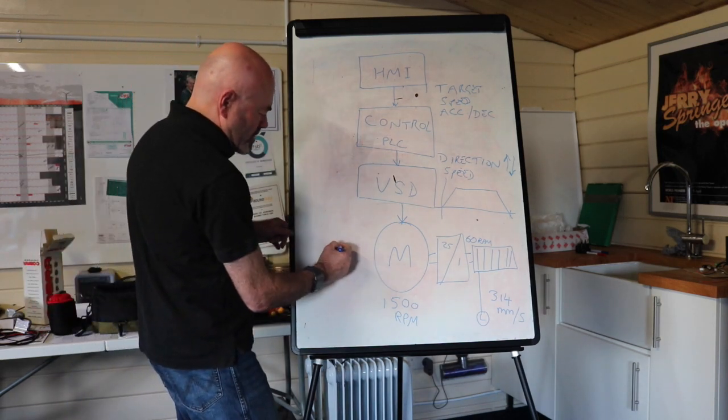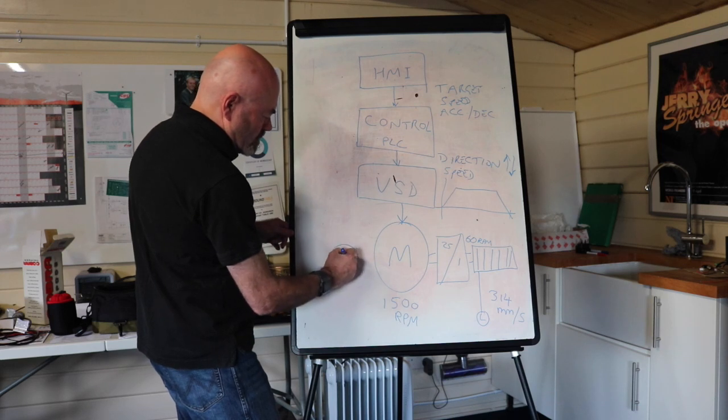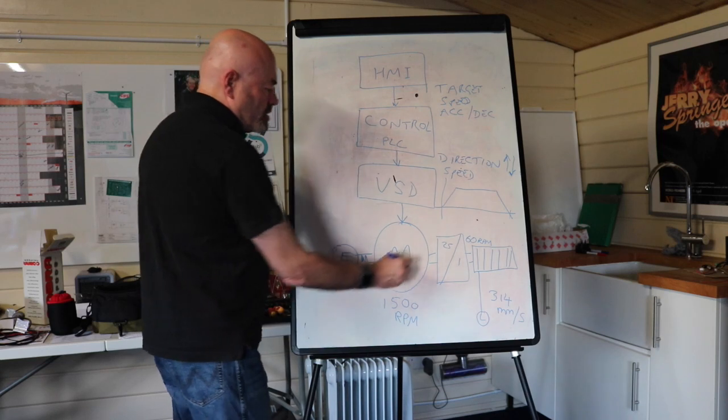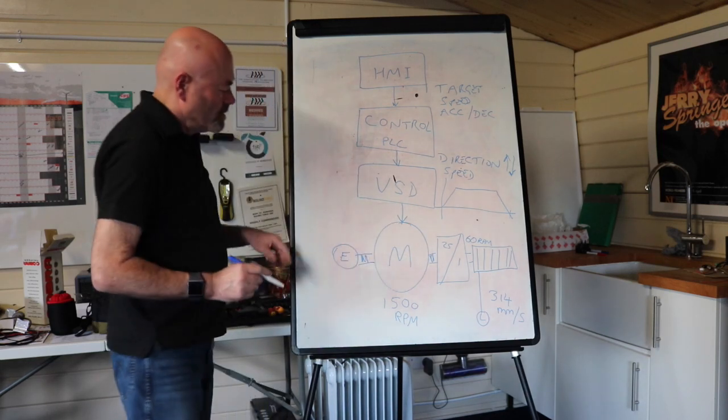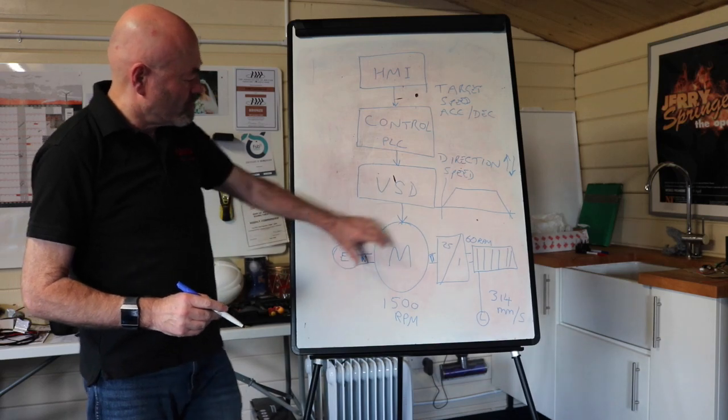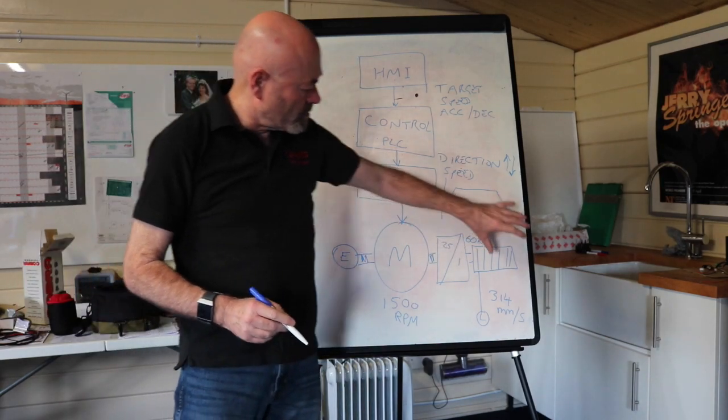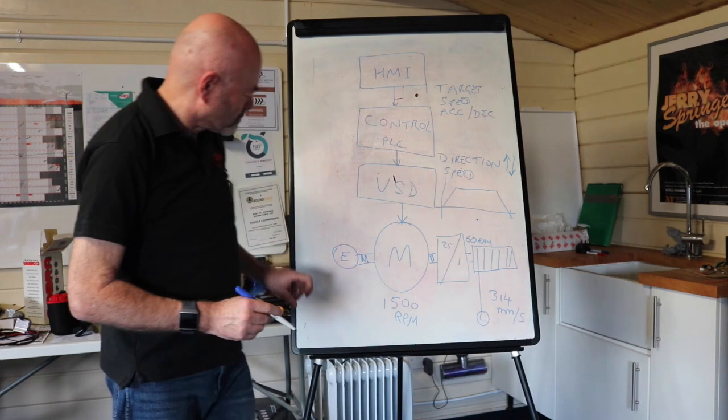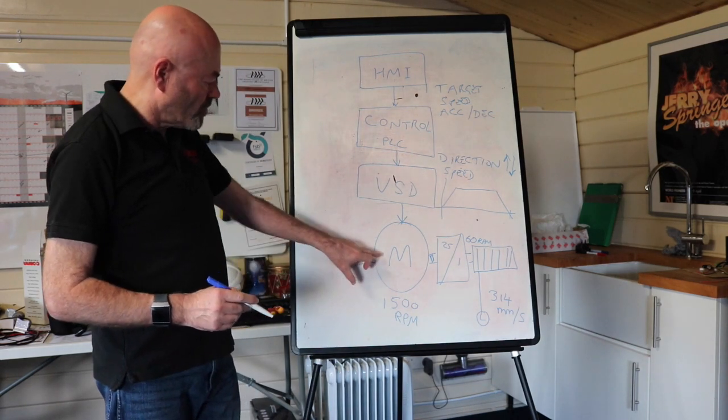And we do that by having an encoder connected to the motor. Very often the encoder is mounted on the back of the motor. Sometimes it's mounted onto the gearbox. Sometimes it's mounted onto the winch. But very often on the back of the motor.